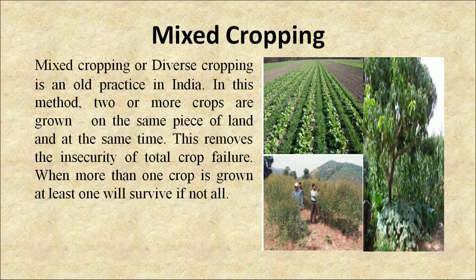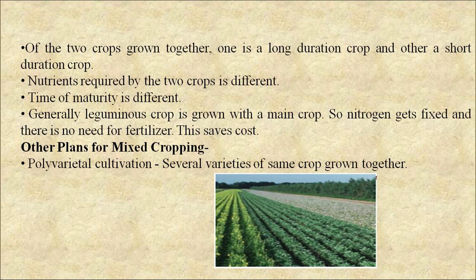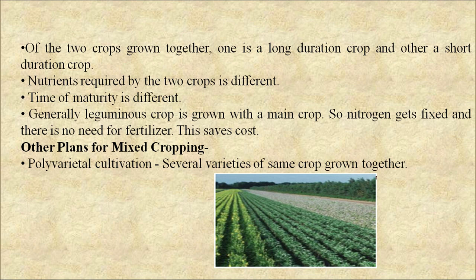Mixed cropping or diverse cropping is an old practice in India. In this method, two or more crops are grown on the same piece of land at the same time. This removes the insecurity of total crop failure — when more than one crop is grown, at least one will survive. Of the two crops grown together, one is a long duration crop and the other is a short duration crop. Nutrients required by the two crops are different and time of maturity is also different. Generally, a leguminous crop is grown with a main crop so that nitrogen gets fixed and there is no need for fertilizer, which saves cost. Other approaches for mixed cropping include polyvarietal cultivation, where several varieties of the same crop are grown together.